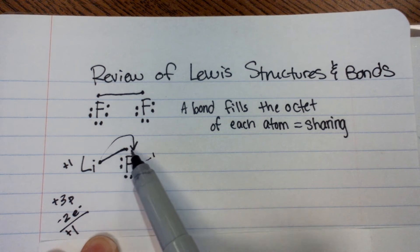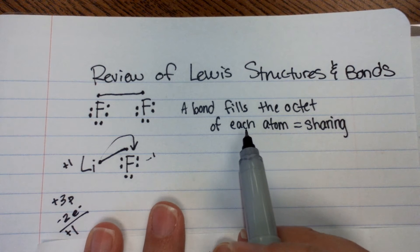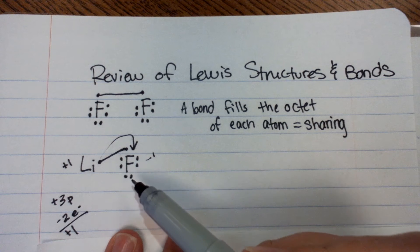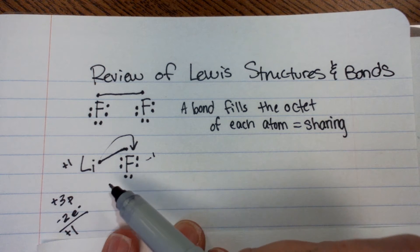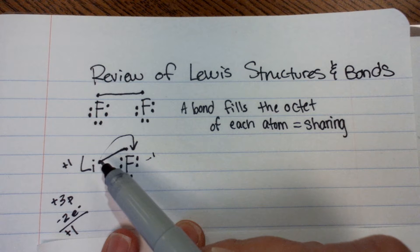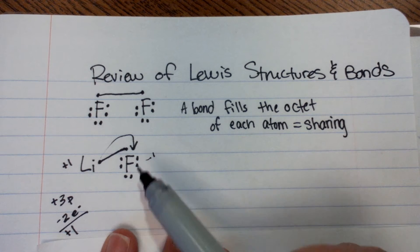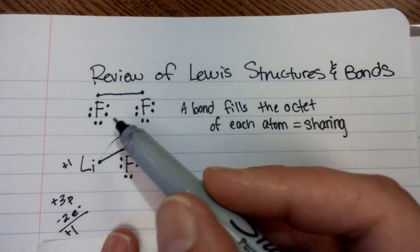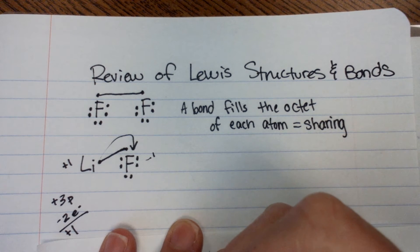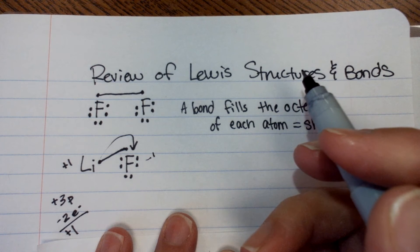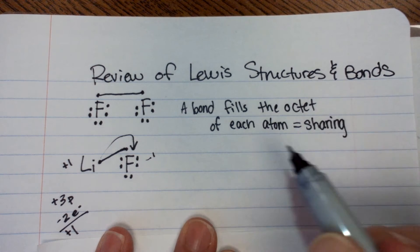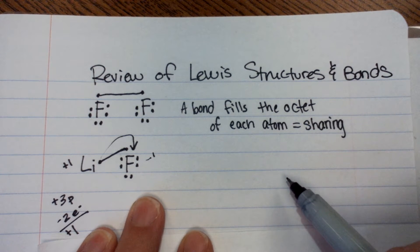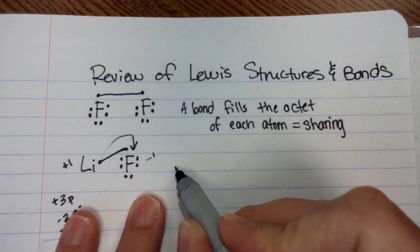Now, we can still show the bond this way, but we have to remember that all atoms want their octet to be full. And so in this situation, lithium's electron goes and fills fluorine's octet and leaves lithium, leaving lithium with a full outer shell, which is just two in this case.